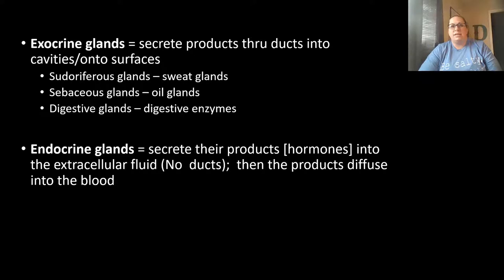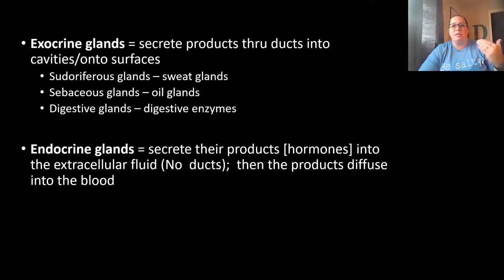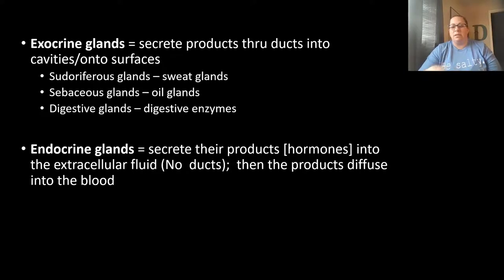The endocrine system focuses on endocrine glands. These glands are unique because they secrete their products — known as hormones — into the extracellular matrix. They don't use any ducts, and those hormones enter the bloodstream, travel to a far-off site, and have their effect there.